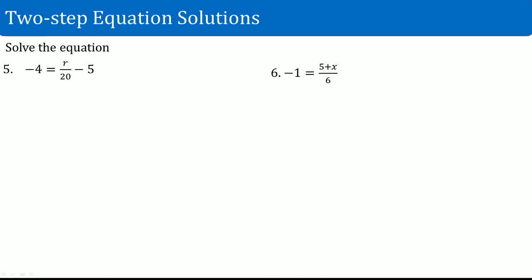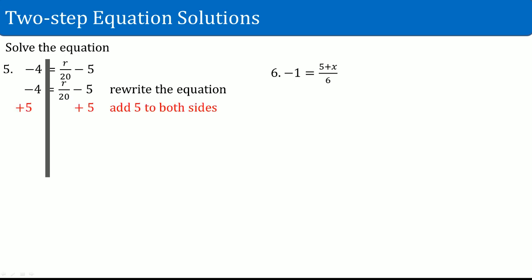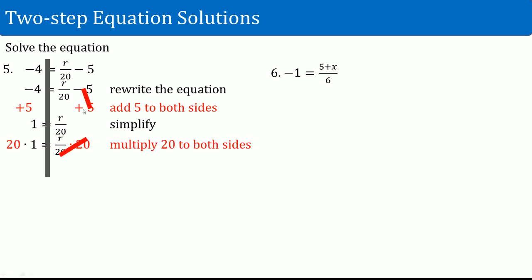Number five: negative 4 equals r divided by 20 minus 5. Rewrite the equation and draw the line straight down. Next to the variable r, you have a divide by 20 as well as a subtract 5. You want to get rid of the outermost thing first, which is the subtract 5. The opposite of subtract 5 is to add 5. Add 5 to both sides — it cancels out. The left-hand side: negative 4 plus 5 becomes 1. What you have left on the right-hand side is r divided by 20. The inverse of divide by 20 is to multiply by 20. That cancels out, leaving just r on the right-hand side. On the left-hand side, 20 times 1 is 20.